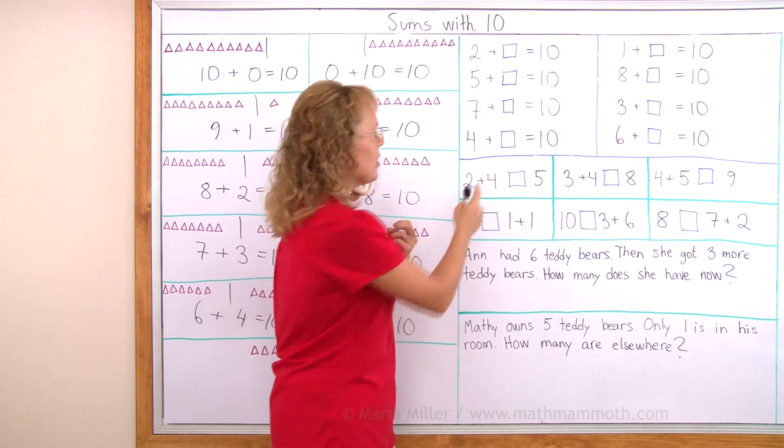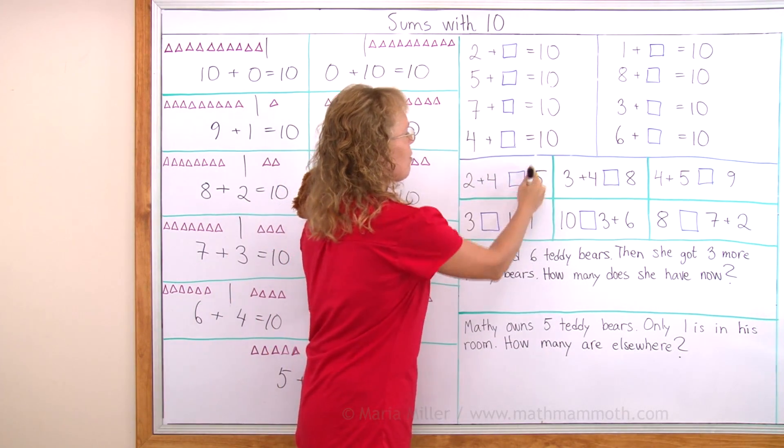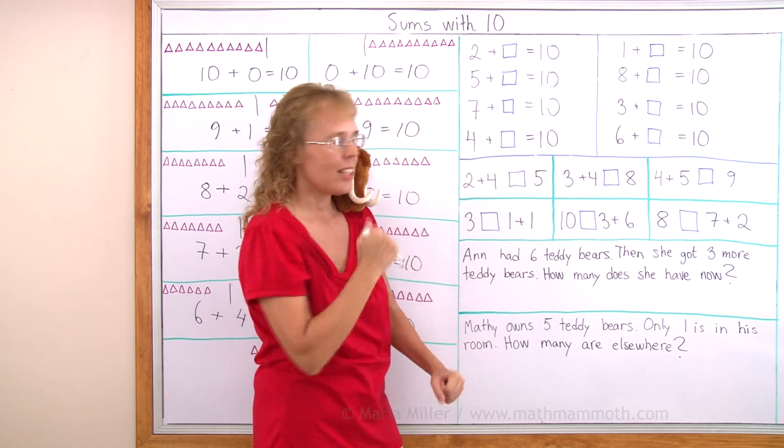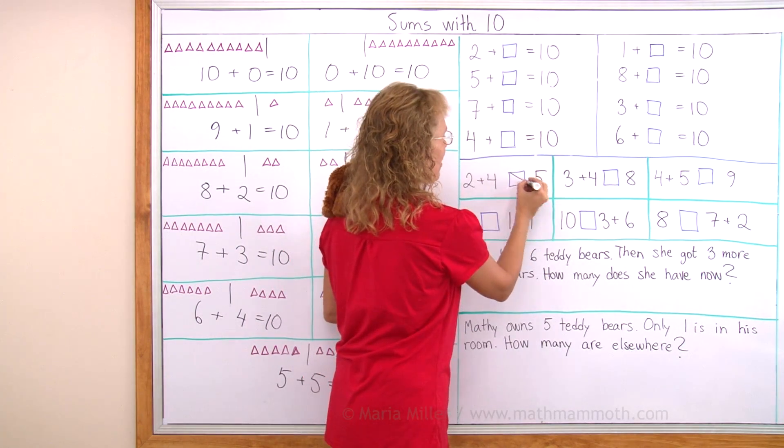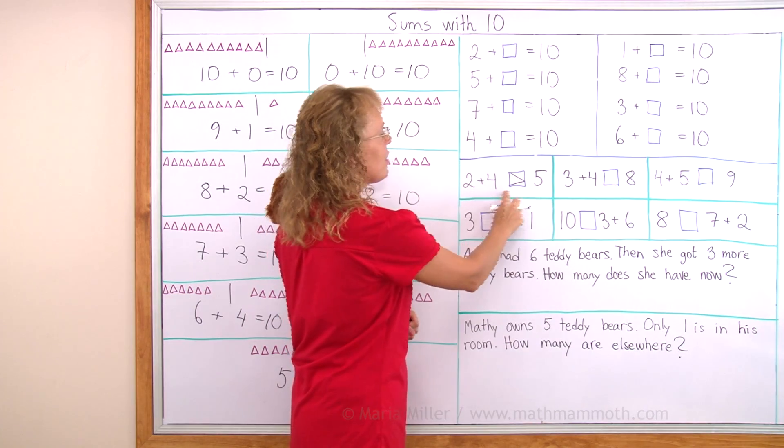It is 6. So here's 6 and here's 5. And now we draw the alligator's mouth. 6 is more. Right? 2 plus 4 is greater than 5.